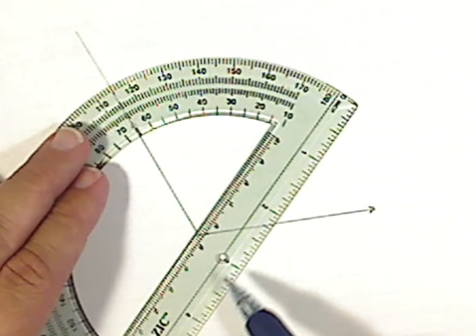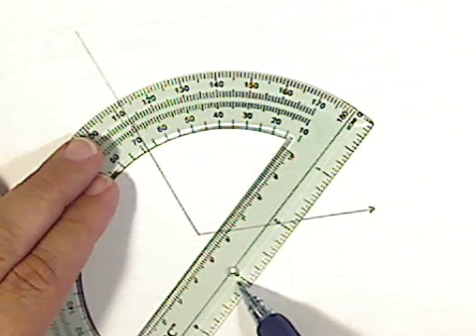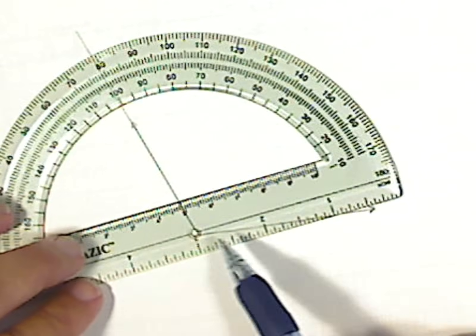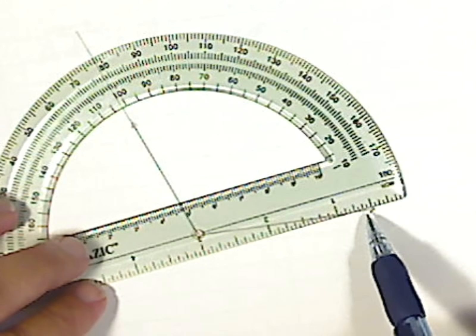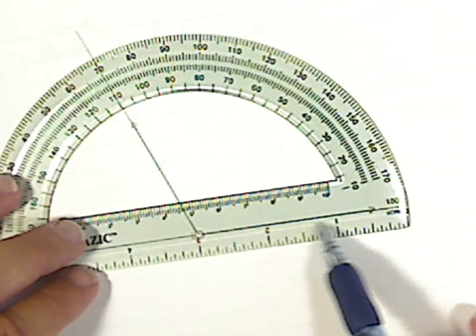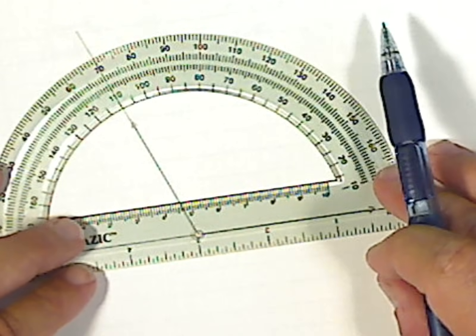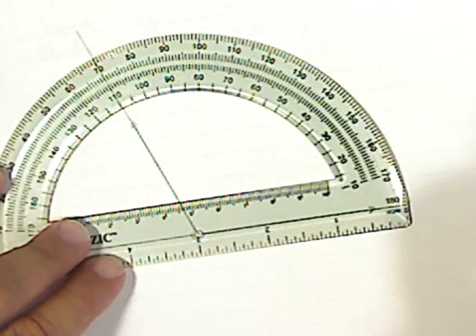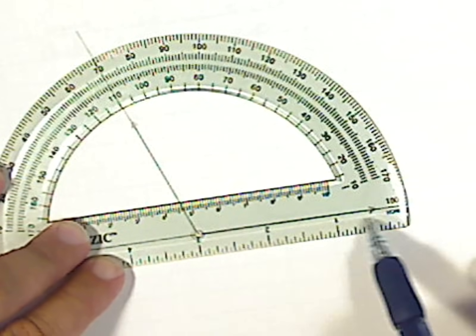So let's put this vertex inside this hole. I've got the vertex right inside the hole. Now let's get this ray lined up where it's right on the zero line. The more accurate I am, the more accurate my measurement will be. There. This ray is in line with the zero degree line.